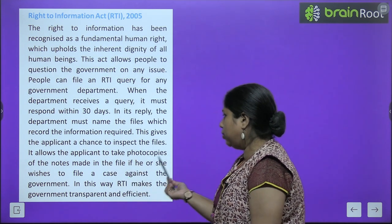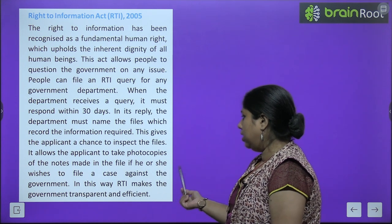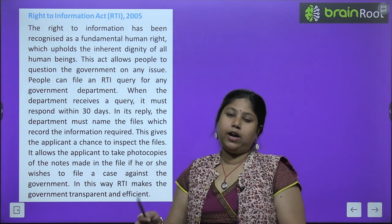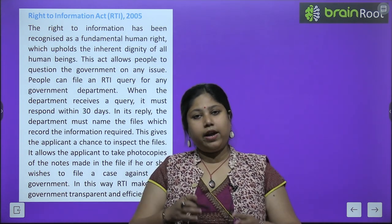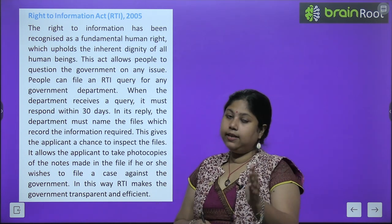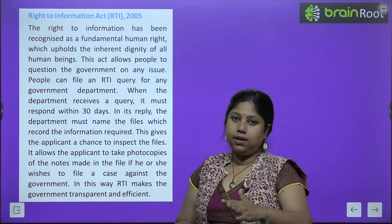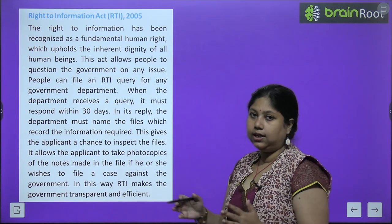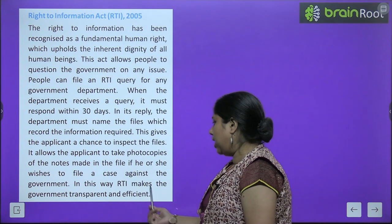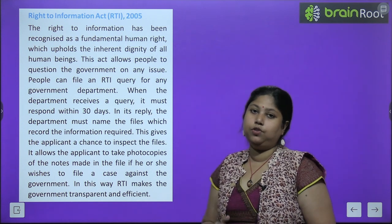The RTI gives the applicant a chance to inspect files and take photocopies of the notes made in the file. If they wish, they can even file a case against the government. During these 30 days when the file is handed over, you can make notes, take photocopies, and if something seems wrong you can approach the courts. In this way RTI makes the government transparent and efficient.